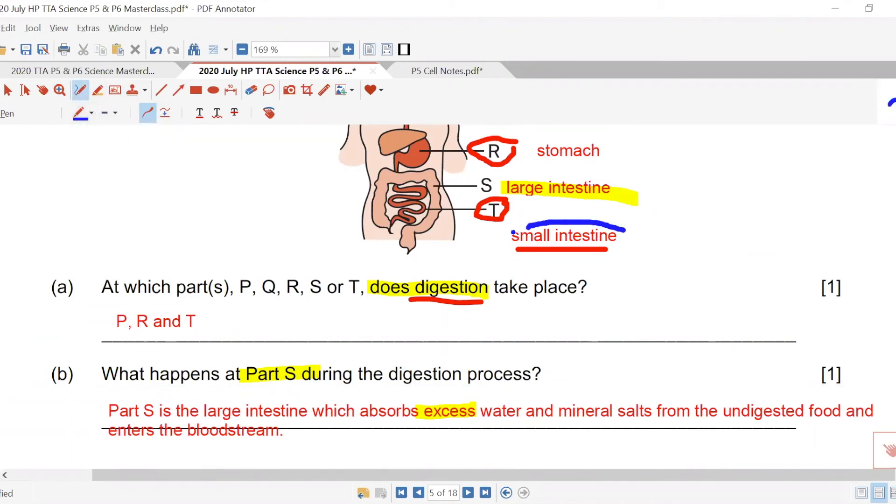But where is absorption taken place is at your small intestine and your large intestine. Only these two places absorb stuff. So only these two places, if these two places spoil, maybe stop working properly...